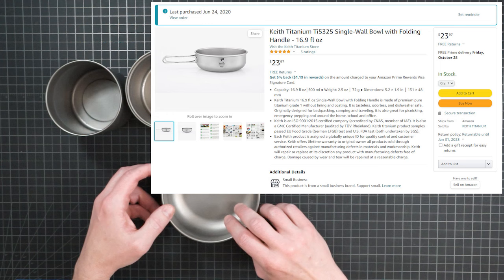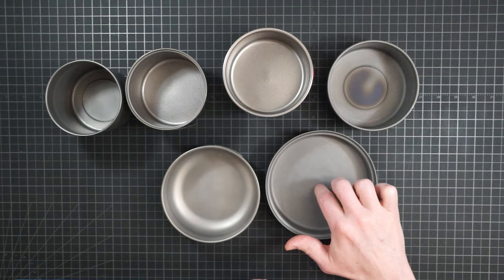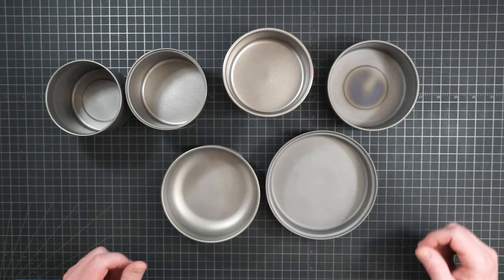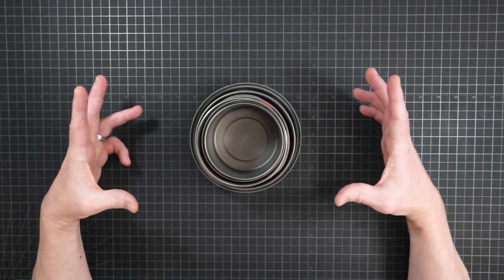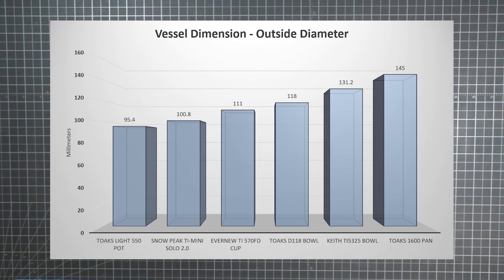And searching around, I found this Keith titanium bowl for vessel number five. And then when you've outgrown even bowls, the only thing left is a pan. And I stole vessel number six from the Tokes 1600 milliliter pot with pan set. And you can see how everybody nests together very nicely. And because the volumes are similar, the wider they get means the shorter they'll be.